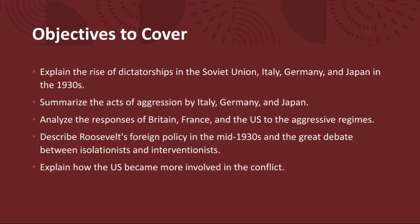We'll then take a closer look at Roosevelt's foreign policy in the mid-1930s and the great debate between isolationists and interventionists concerning what was going on in Europe. President Franklin D. Roosevelt faced mounting challenges abroad as he sought to balance domestic priorities with growing international tensions. While Roosevelt expressed sympathy for the victims of aggression and supported collective security measures such as the League of Nations, he also faced strong opposition from isolationist forces in Congress and the public, who favored non-intervention and neutrality.